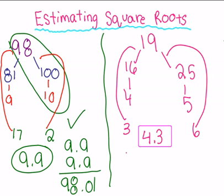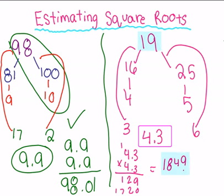4.3 times 4.3, 18.49, which is almost 19, so that's correct.